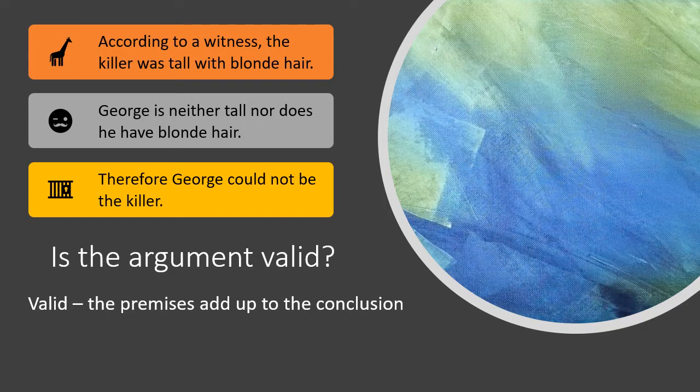A final tactic: for a valid statement, you can also ask whether that's the only conclusion that can be drawn. Instead of 'therefore George could not be the killer,' you could say 'according to the witness, George could not be the killer' — that changes the perspective of the statement considerably. The more accurate way of looking at this is: according to the witness, George could not be the killer. Making those kinds of distinctions about validity ultimately helps you make better arguments.